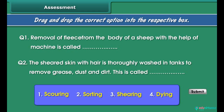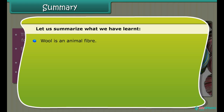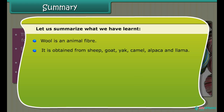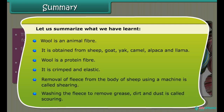Summary: Wool is an animal fiber obtained from sheep, goat, shark, camel, alpaca, and llama. Wool is a protein fiber — it is crimped and elastic. Removal of fleece from the body of sheep using a machine is called shearing. Washing the fleece to remove grease, dirt, and dust is called scouring.